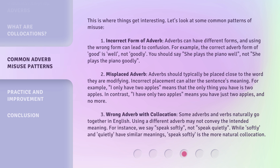3. Wrong adverb with collocation. Some adverbs and verbs naturally go together in English. Using a different adverb may not convey the intended meaning. For instance, we say 'speak softly,' not 'speak quietly.' While softly and quietly have similar meanings, 'speak softly' is the more natural collocation.